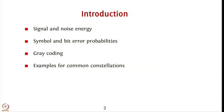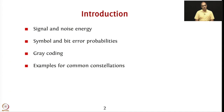As an introduction, over this and a couple of lectures we will look at aspects connected to signal and noise energy, then a detailed look at symbol error probabilities and bit error probabilities for various modulation formats. In the context of bit error probabilities we will take a close look at gray coding and how we can allocate bits to symbols to achieve the best performance and minimum bit error rates. Finally, we look at examples for common constellations such as PAM and QAM.